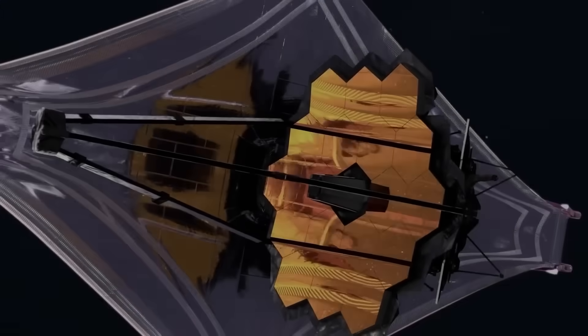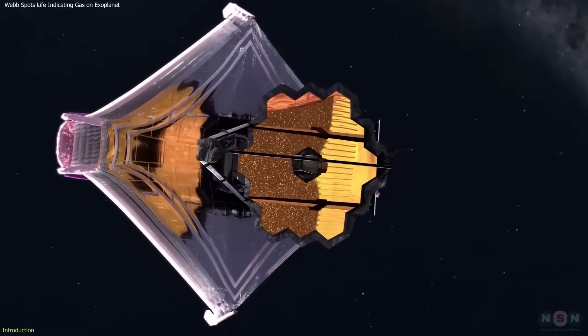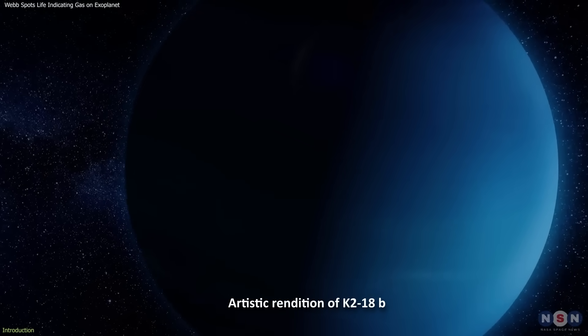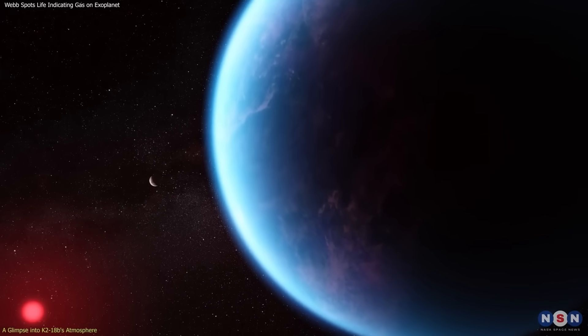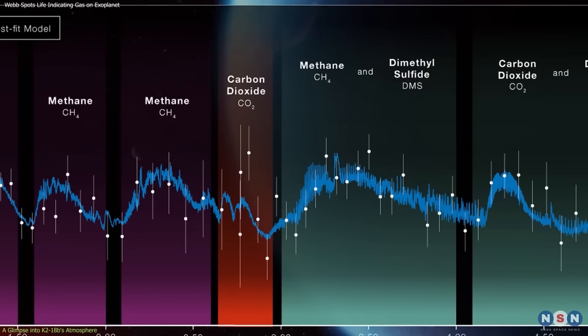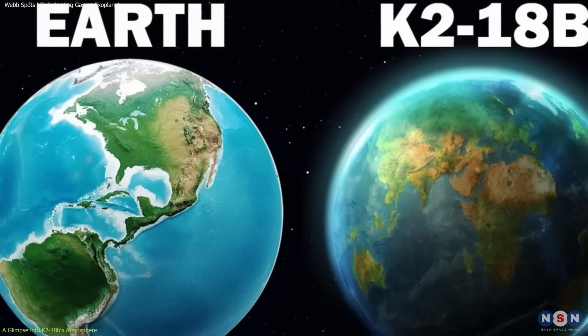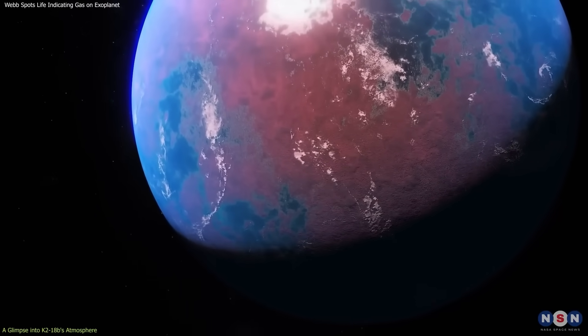This kind of analysis has already shown, for example, the abundance of methane and carbon dioxide on an exoplanet called K2-18b, located 120 light years away from us in the habitable zone of its star. This was the first time carbon-based molecules had been found in an exoplanet that is in the habitable zone of its star. Its composition supports the idea that there may be a water ocean underneath a hydrogen-rich atmosphere on it.